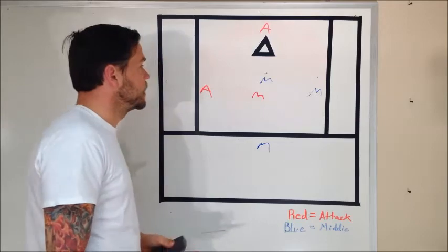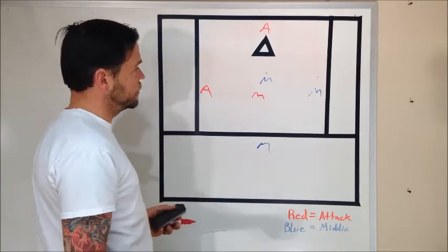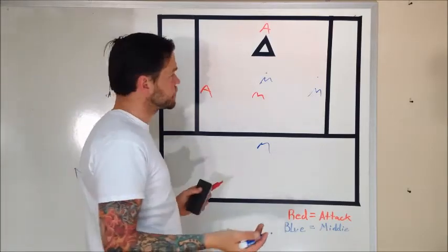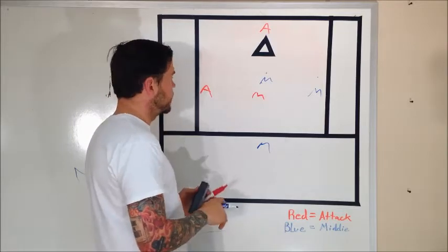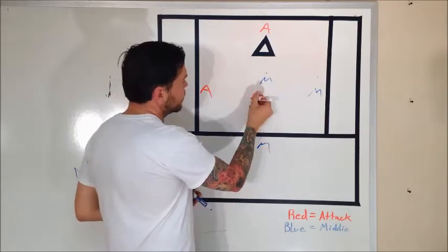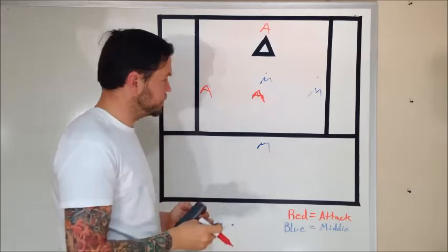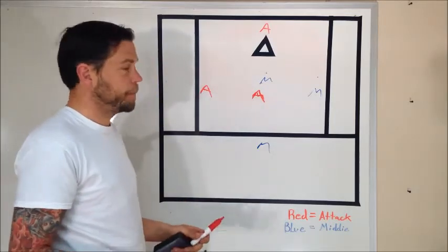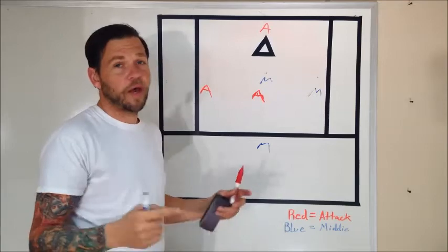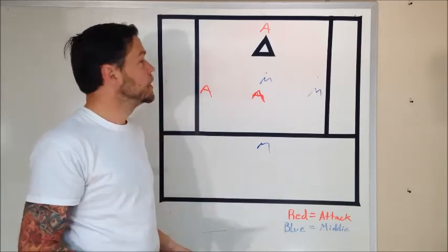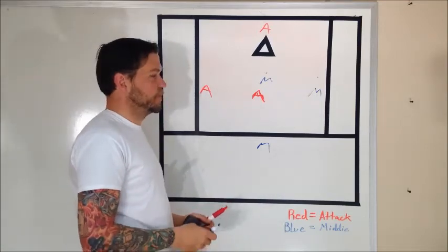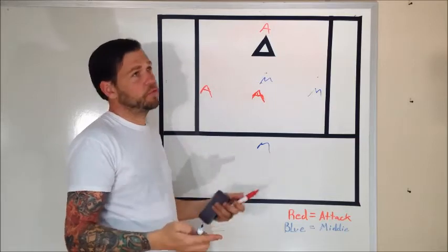From here, we need to figure out how to get out of it and go back to one of our other offenses. Chances are I'm normally just going to yell orange whenever I want us to go back into our basic open, just because it's easy for us to remember. We do it a lot, so it's easy to just go back to orange.